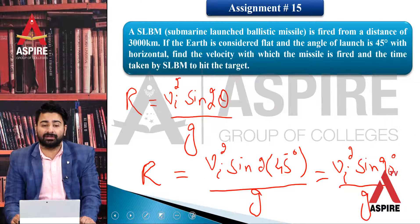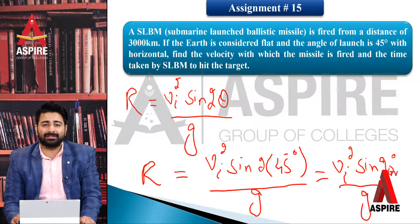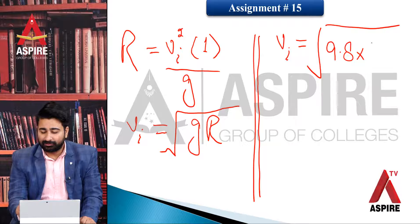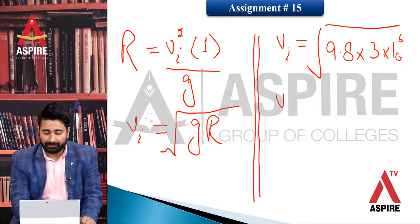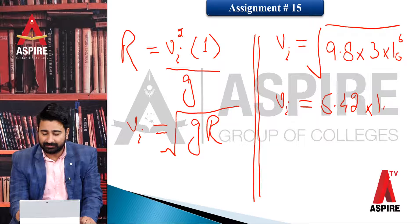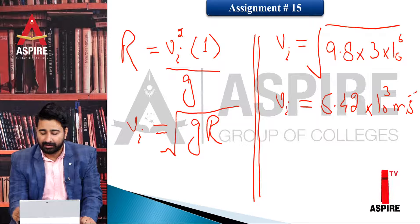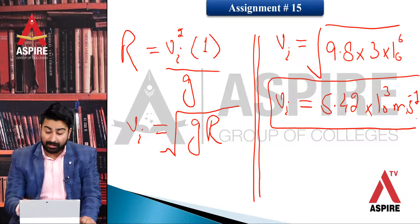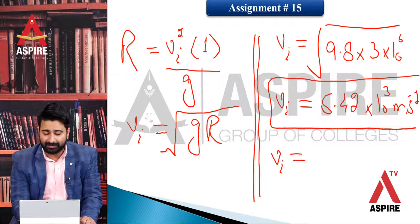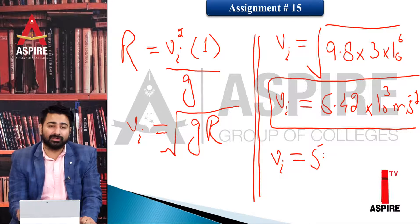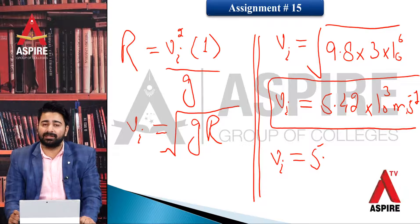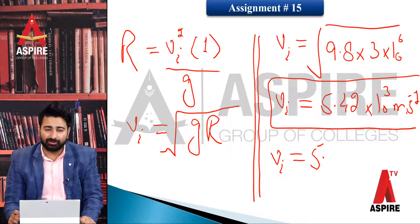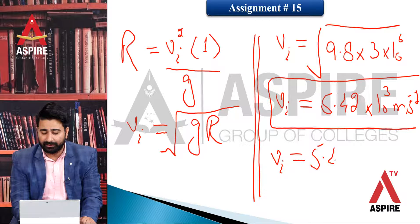Range given ہے 3000 kilometer، جو meters میں 3×10⁶ m ہے۔ Calculator پر solve کریں تو جواب آتا ہے vi = 5.42×10³ m/s۔ یہ ہمارا initial velocity کا answer ہے۔ اگر kilometer per second میں لکھنا چاہیں تو: ایسی ballistic missile جس کی range 3000 km ہو اور 45° پر launch کی جائے، اس کی initial velocity 4.2 km/s ہوگی۔